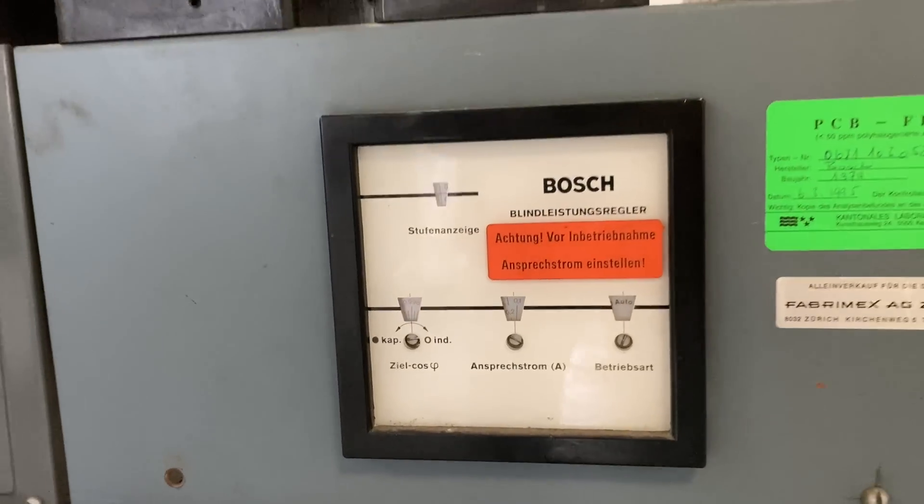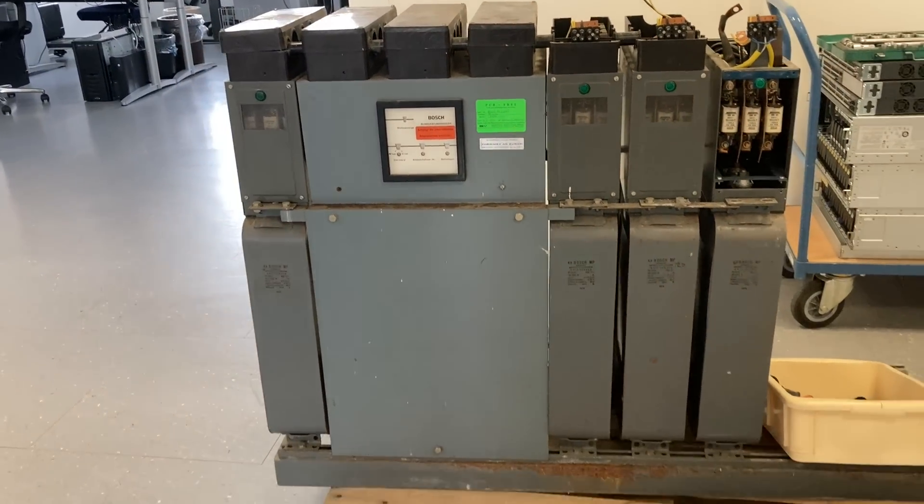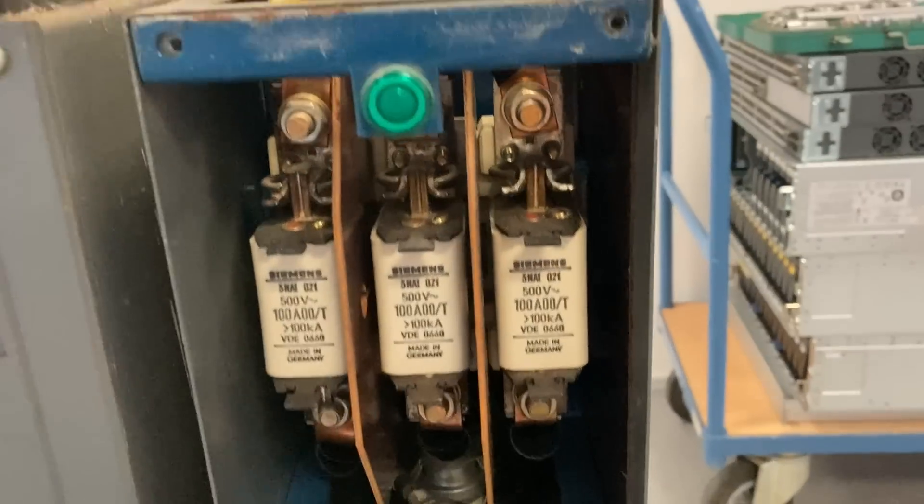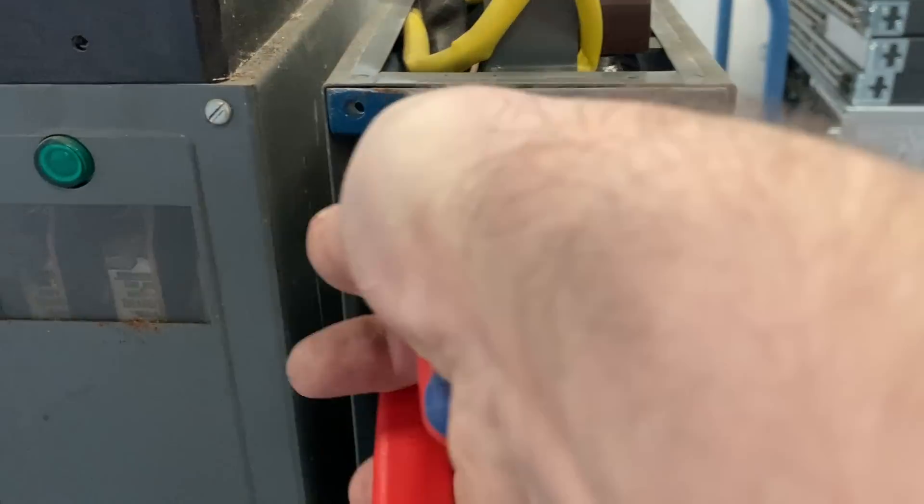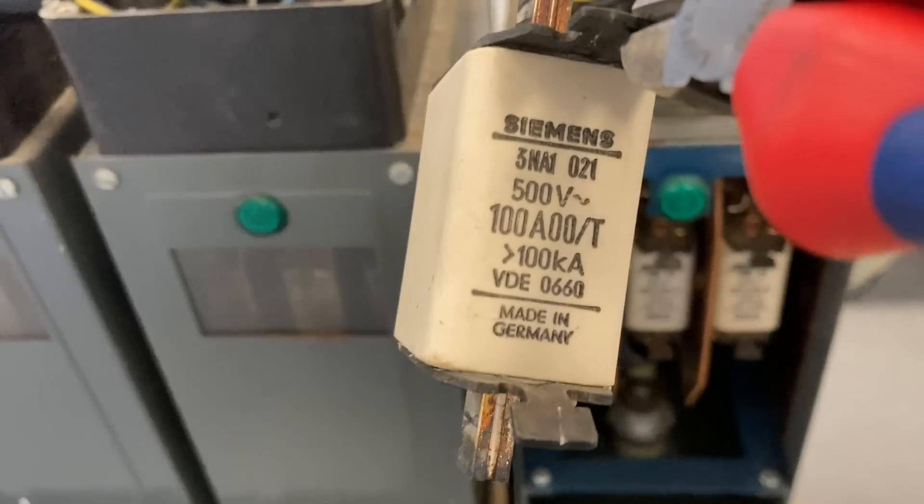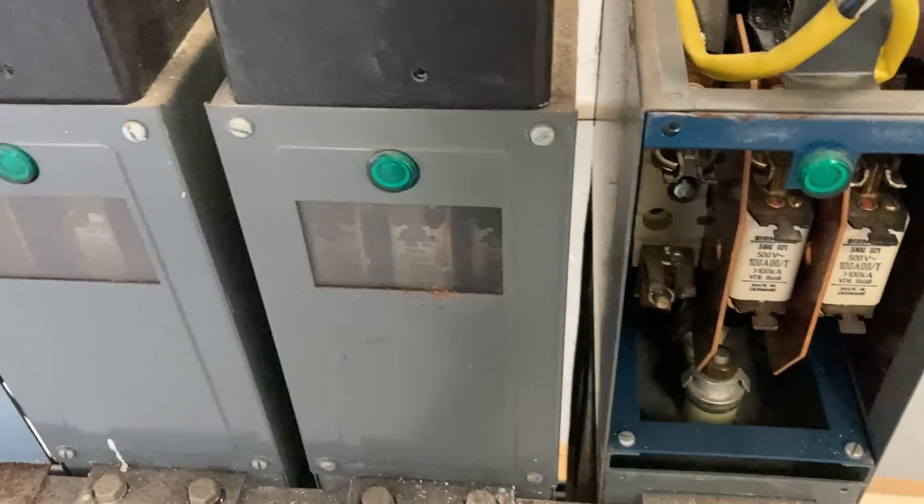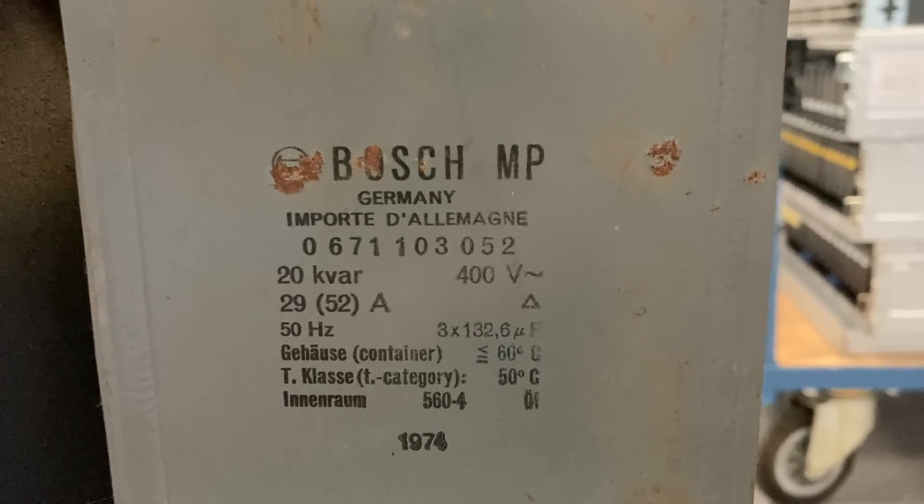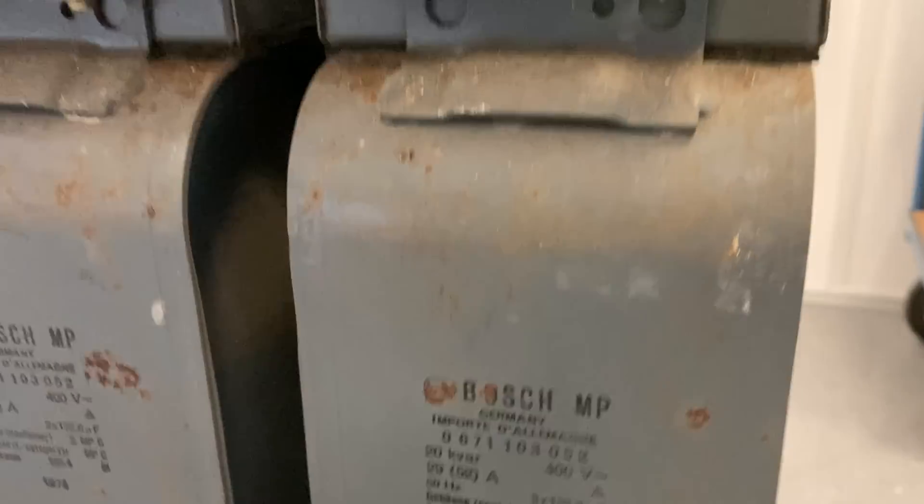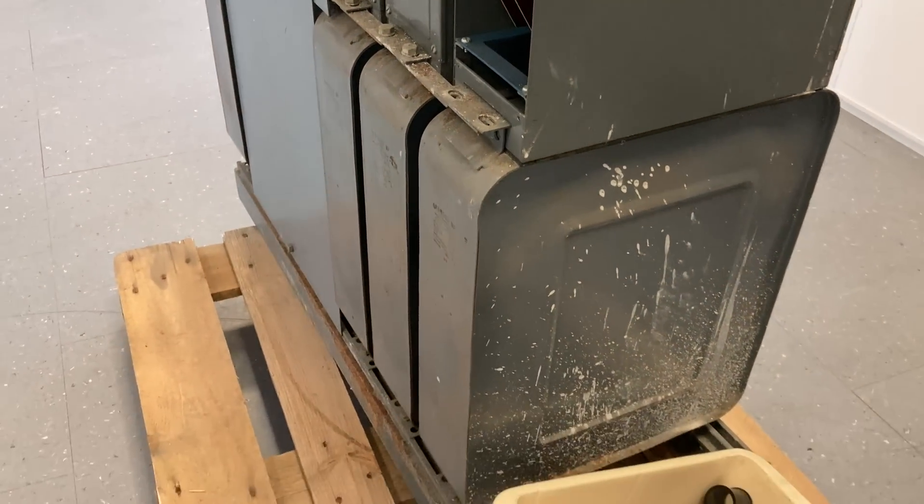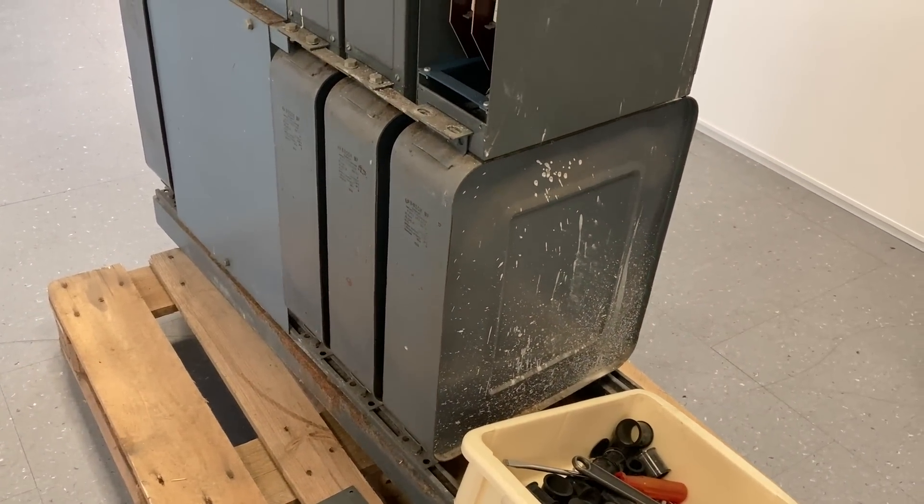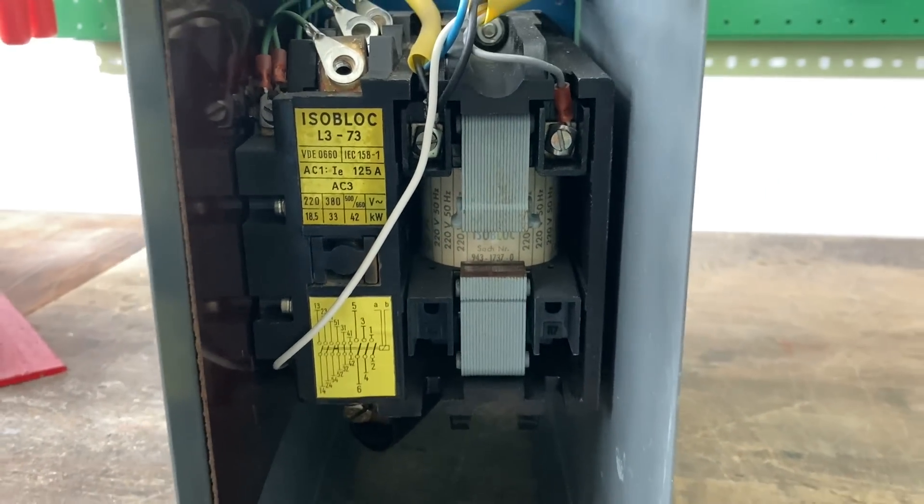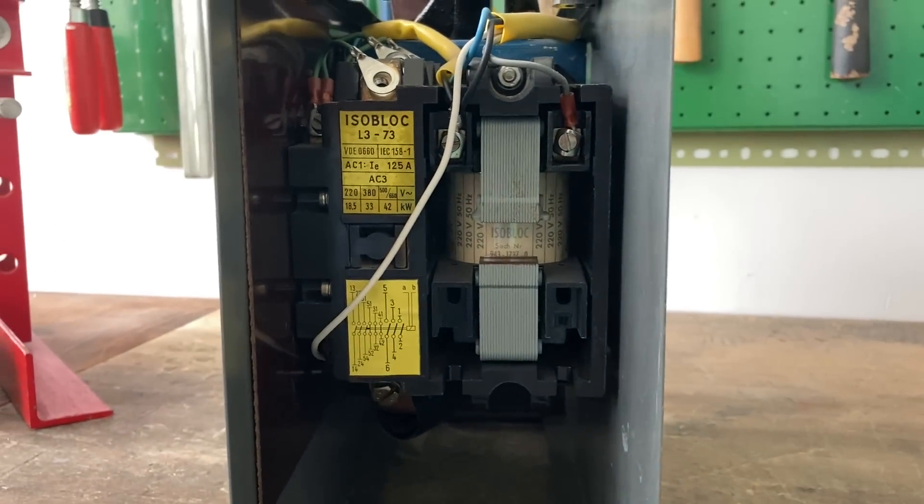That's how a reactive power compensation unit looks like. At least, it looked like in 1974. We have a lot of large fuses, 100 amps each. Three phases makes three fuses. Right below the fuses, we have capacitors, three times 132 microfarad. Here we have the relay box. There is one relay per capacitor triple pair.